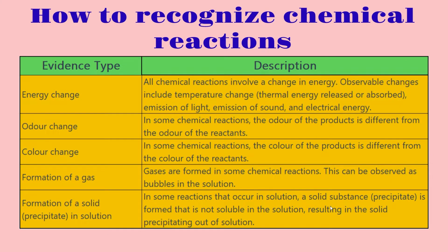For how to recognize chemical reactions, here we have a table of different types of evidence you can use to identify if a chemical reaction occurred. For the first evidence, energy change: all chemical reactions involve some sort of change in energy, and observable changes can include temperature — meaning thermal energy either being absorbed or released — as well as emission of light, emission of sound, and electrical energy.